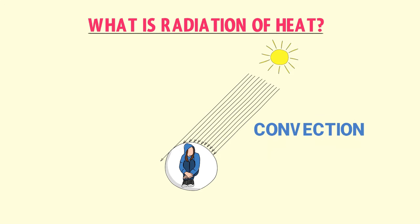The higher the temperature of an object, the higher the rate of radiation of heat energy — so hot objects radiate more energy than cold objects. As a bonus point, remember that black objects are good absorbers of radiation, like a black t-shirt, while white objects are poor absorbers or good reflectors of radiation.